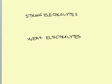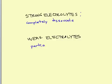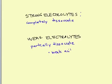It is going to be important to know the difference. Strong electrolytes completely dissociate — completely. And weak electrolytes partially dissociate. For weak electrolytes there are only two types: weak acids and weak bases.